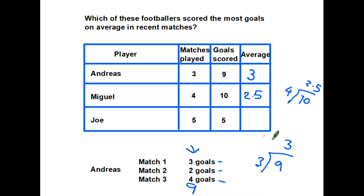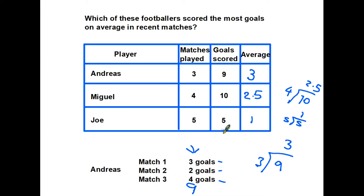Joe has played in five matches and scored five goals. Five goals divided by five matches means he has scored one goal per match on average. It's worth noting we don't know whether Joe scored one goal each match or all five in one match — it doesn't matter. All we know is he scored a total of five, and dividing by the number of games gives an average of one goal per match.